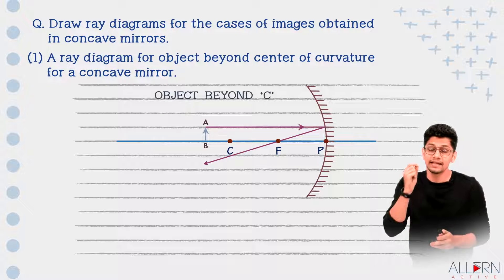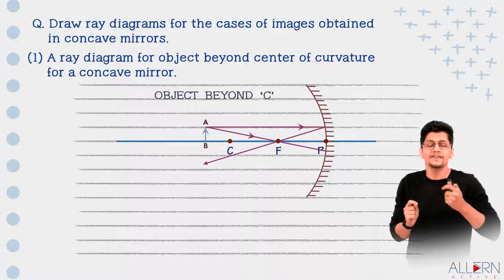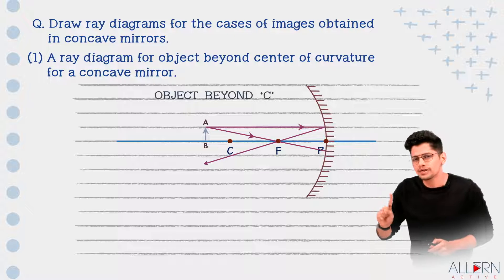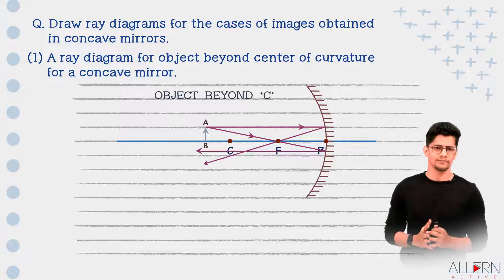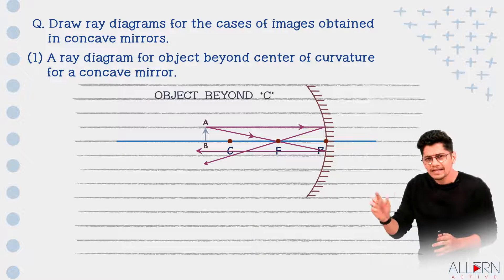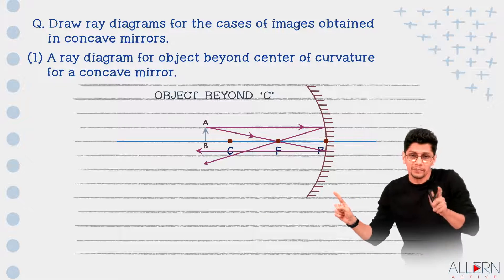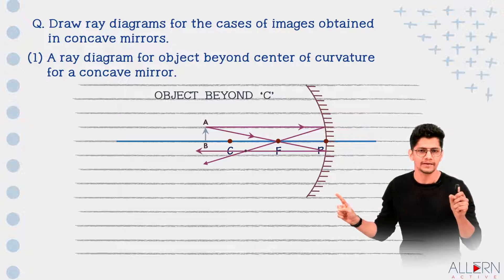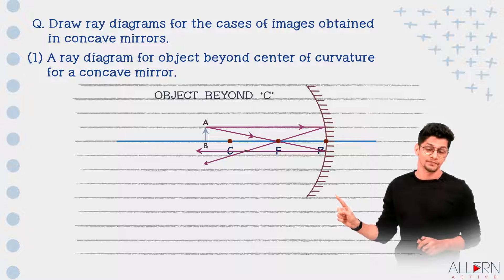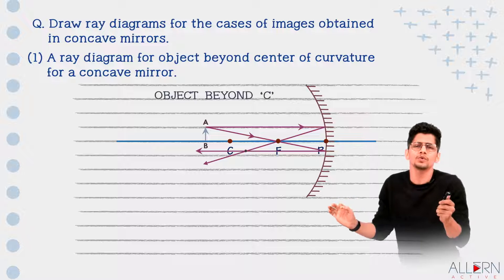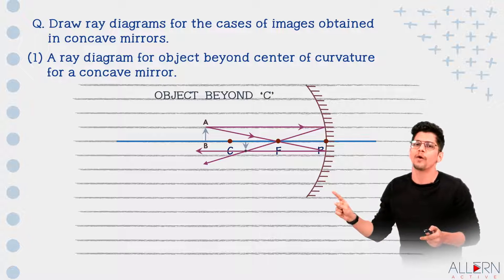For the second rule, the incident ray passes through the focus; after reflection it goes parallel to the principal axis. Pause the video, draw the base diagram, and apply these two rules. The reflected rays meet at a point, and at that point the image is formed. We draw the image the same way as the object, but this time the image is below the principal axis, so the arrowhead should point in the downward direction.